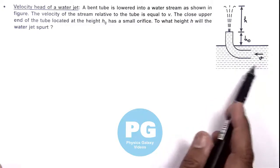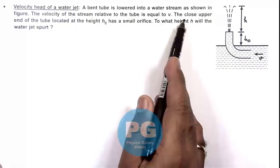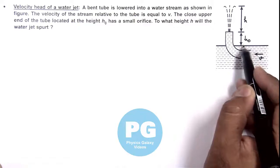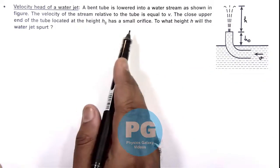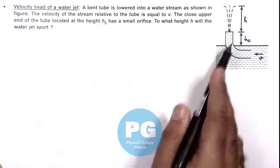Or we can consider the water is flowing in tube at v and tube is at rest. We are given that the closed upper end of the tube is located at height h_not above the stream where water is flowing at speed v. We are required to find to what height h will the water jet spurt.